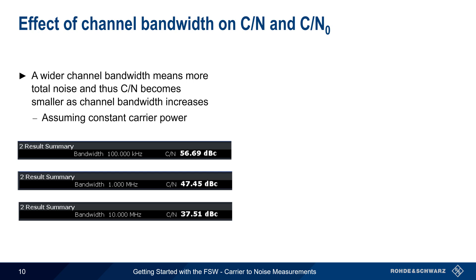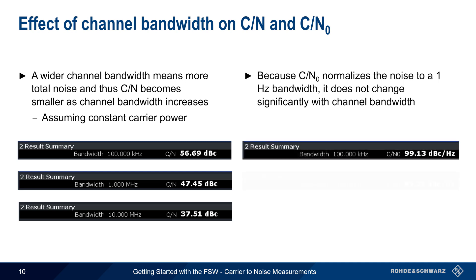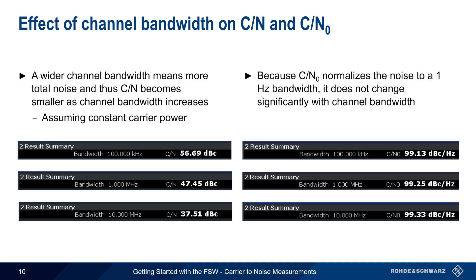This is because wider bandwidths will increase the total noise power, and thus lower the Carrier-to-Noise ratio, assuming of course that the carrier power remains constant. On the other hand, because Carrier-to-Noise Density normalizes the noise to a 1 Hz bandwidth, changing the channel bandwidth does not lead to any significant change in Carrier-to-Noise Density, assuming that the noise is white or uniformly distributed across the channel bandwidth.